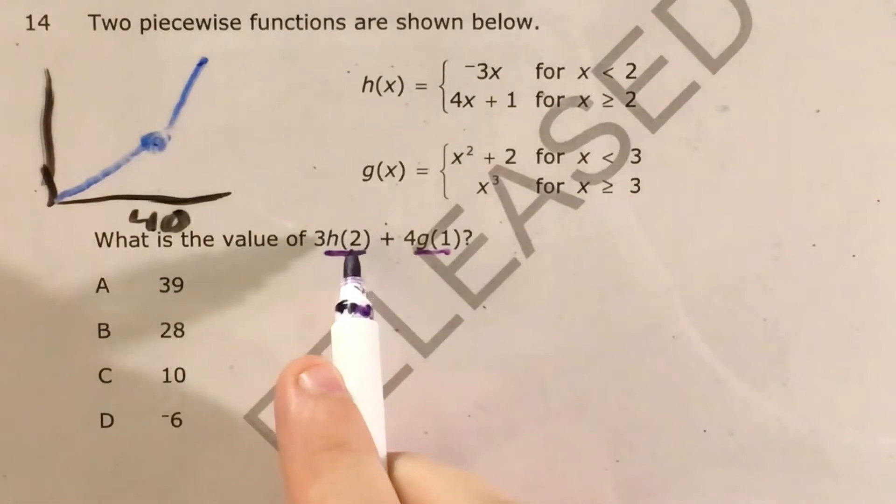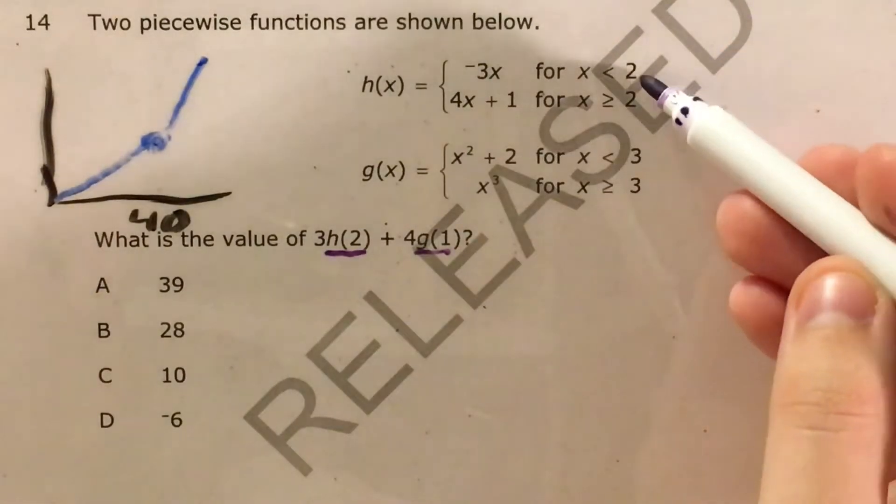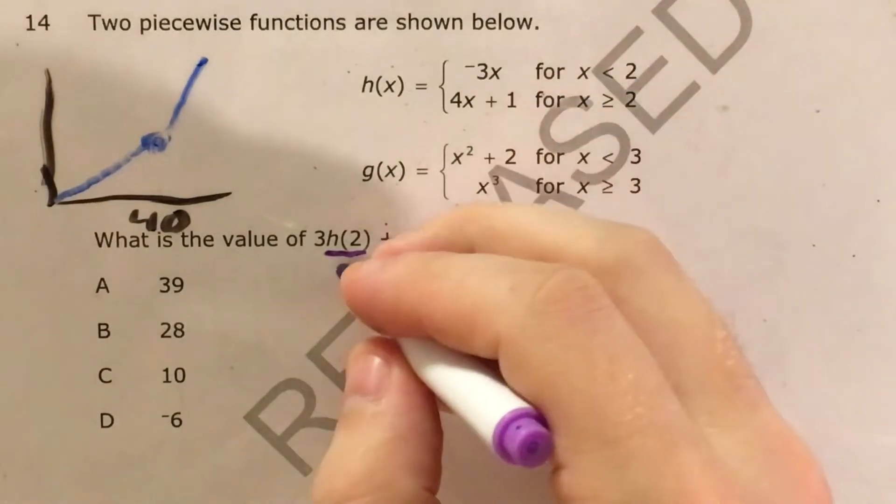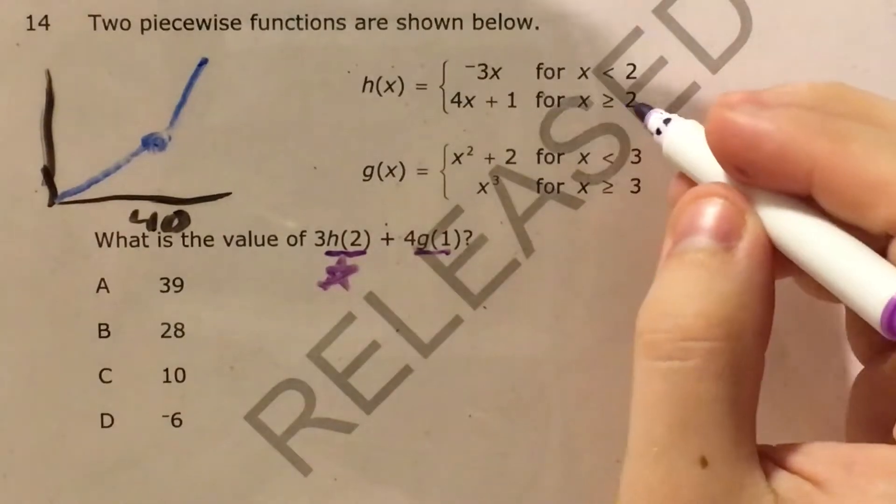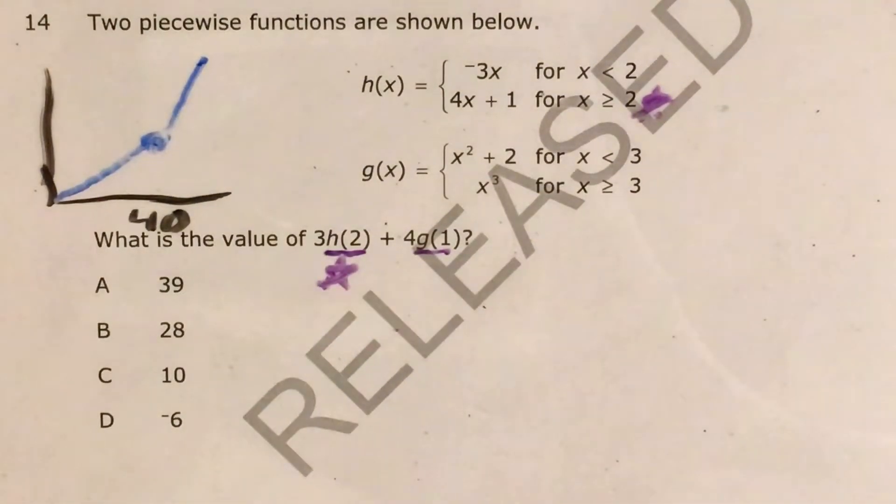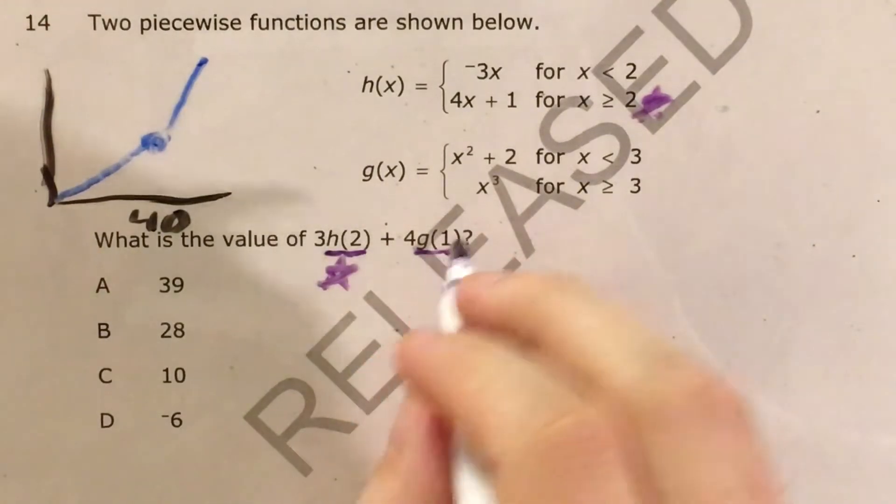So for instance, H of 2, our x is 2 in this case, and in this range this one has x is less than 2, this one has x is greater than or equal to 2. H of 2 fits into the x is greater than or equal to 2 range.